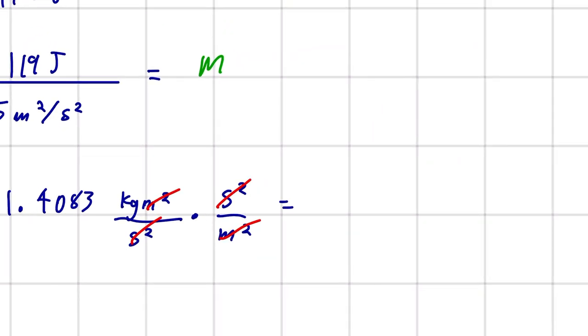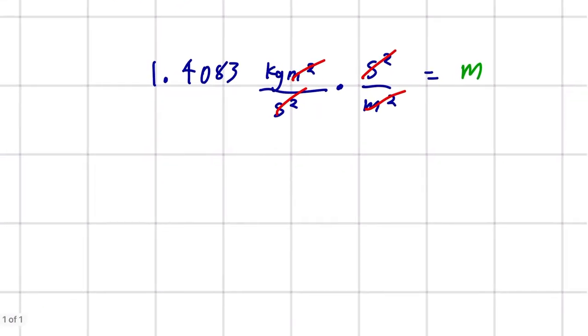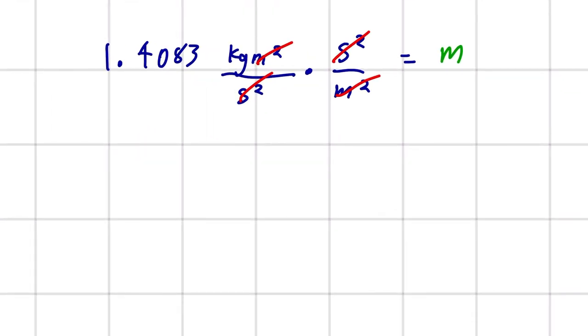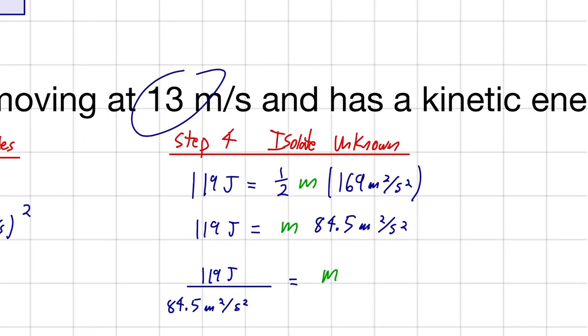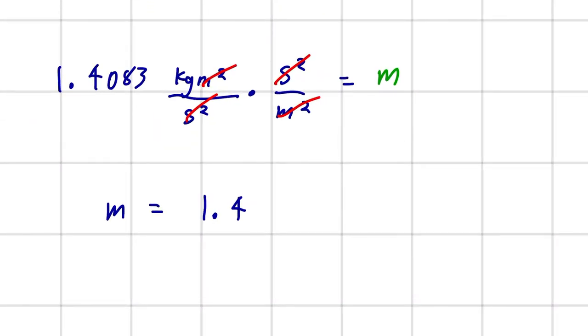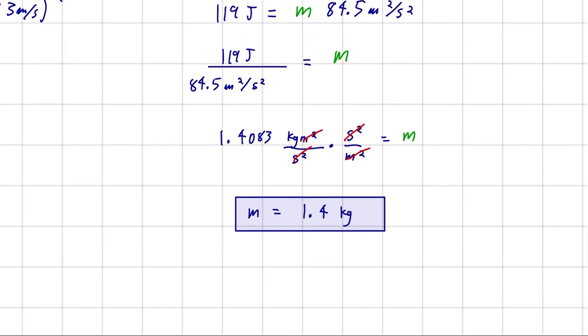And that's okay, because we want a mass. So, that gives us our final answer. Mass is equal to 1.4. And I'm doing two significant digits, because that's all we're given in the question. So, 1.4 kilograms. And that is the final answer.